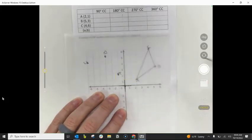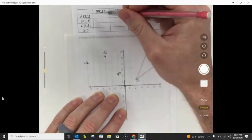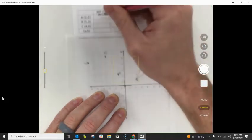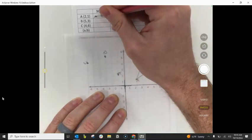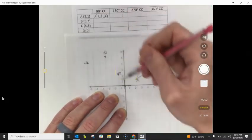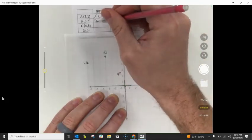And then here's my point A prime, B prime, C prime. It looks like after a 90 degrees counterclockwise rotation, A went from (2,1) to (-1,2). So A prime is (-1,2). B went to (-3,5).